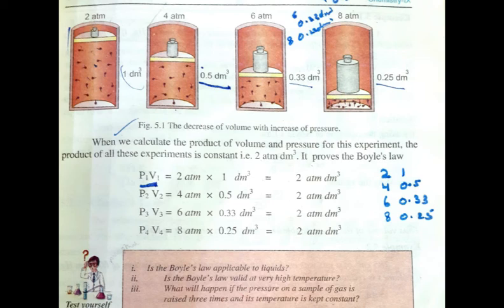When we double the pressure, the volume of gas decreases. When pressure was 2 atm, volume was 1 dm³. When pressure increased to 4 atm, volume became 0.5 dm³. When pressure increased three times to 6 atm, volume reduced to 0.33 dm³. Similarly, when pressure was 8 atm, volume decreased to 0.25 dm³.